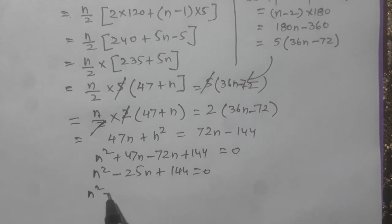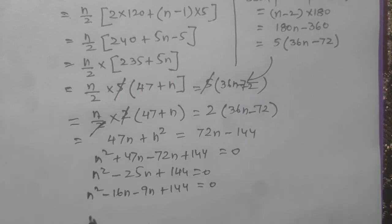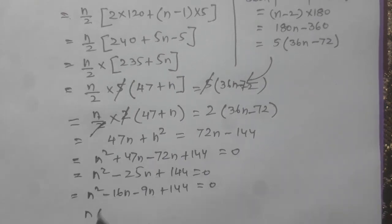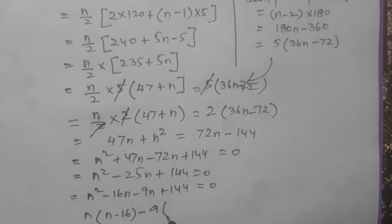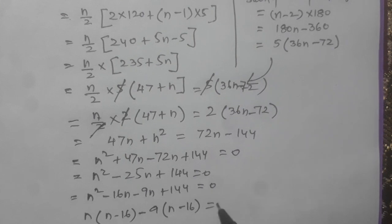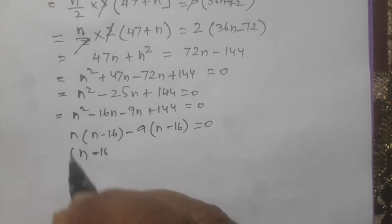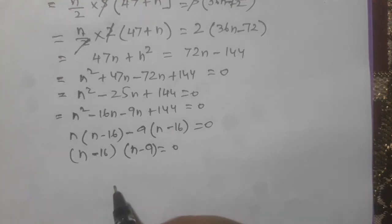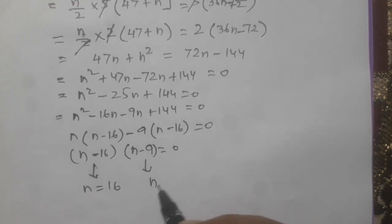So N squared minus 16N minus 9N plus 144 will be 0. Now we shall take common N, N minus 16, here we shall take common 9. So N minus 16 equals 0, N minus 9 equals 0. By this N equals 16, by this N equals 9.